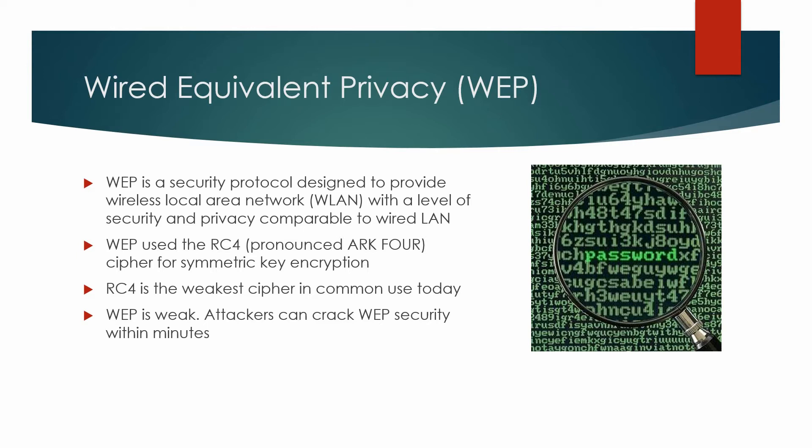WEP uses the ARC-4 cipher for symmetric key encryption. ARC-4 is a stream type cipher. It is the weakest cipher in common use today. With WEP cracking software easily downloadable from the internet, attackers can crack WEP security within minutes. Using WEP is worse than no security, because companies that implement WEP may think they are protected, when actually they're not.